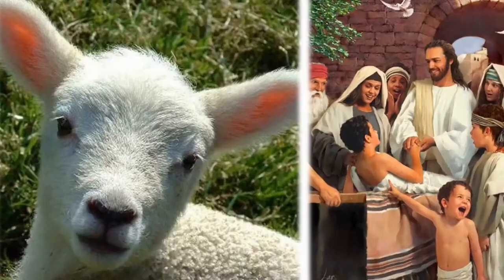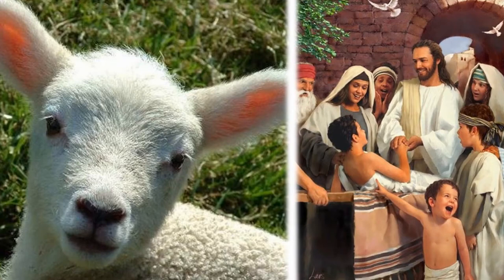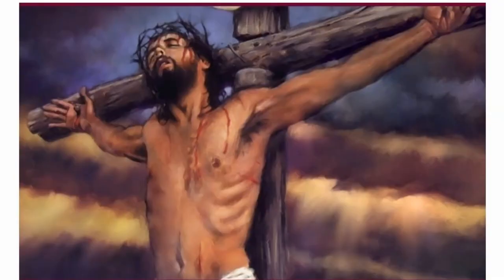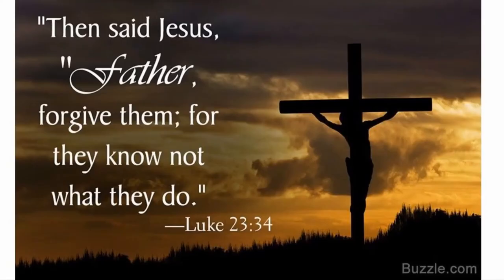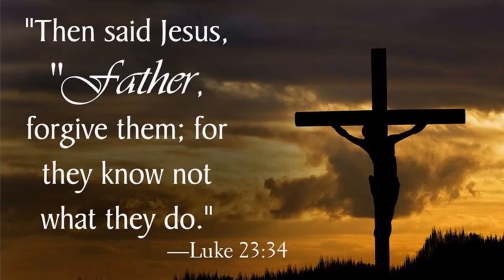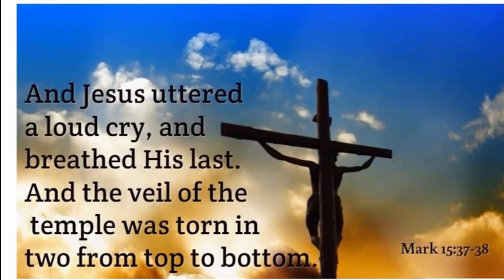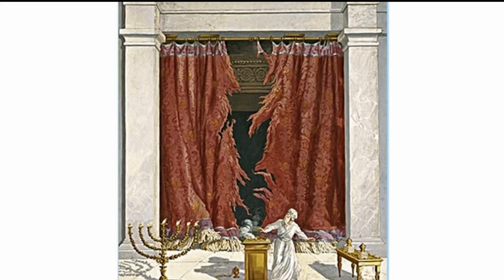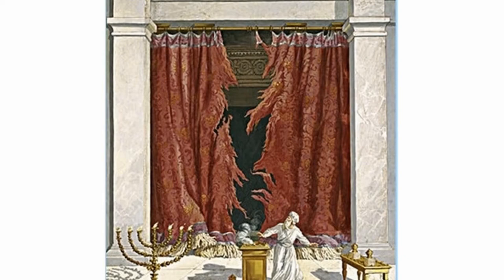As innocent as a lamb, Jesus lived a perfect life, but the people he had chosen to represent him instead murdered him, being manipulated by Satan, the prince of this world. As he poured out his life, Jesus prayed, 'Father, forgive them, for they do not know what they are doing.' And Jesus cried out with a loud voice and breathed his last. Then the veil of the temple was torn in two from top to bottom. With the tearing of the veil, the mysterious symbolism of the earthly sanctuary was over. No longer would the sacrifice of lambs have meaning, because the reality that they had pointed to had come.